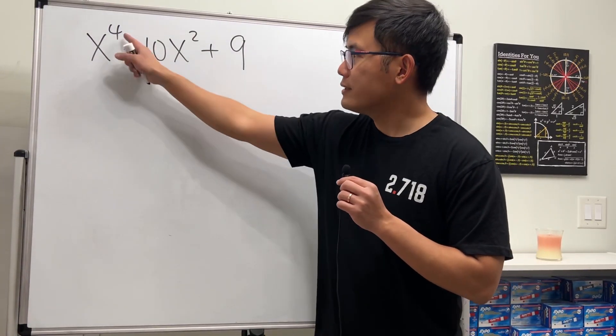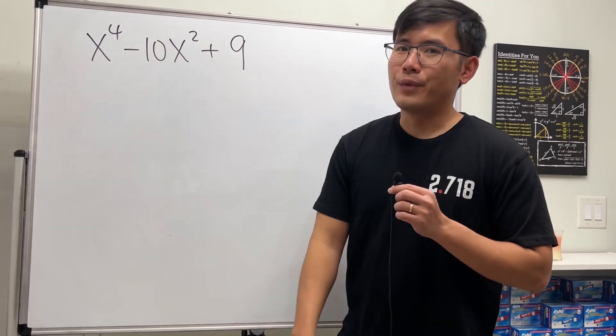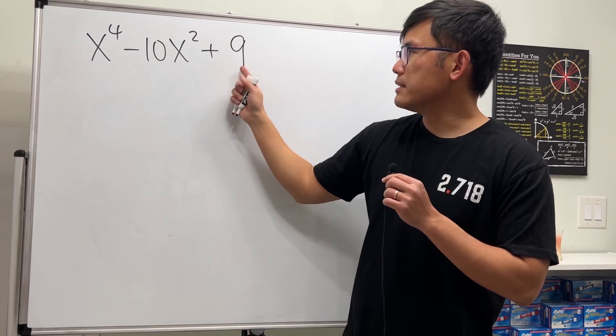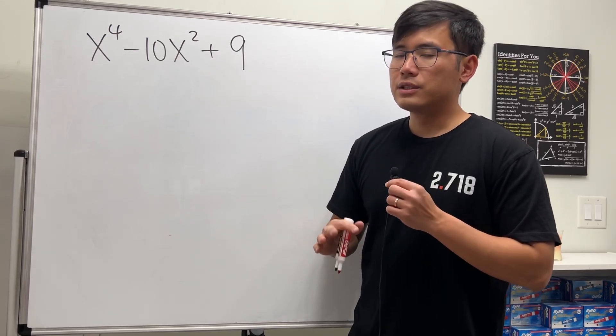Here we are going to see how to factor a fourth degree trinomial. We have x to the fourth power minus 10x squared plus 9, and notice this right here has no x term, so in fact we can use the tic-tac-toe method.